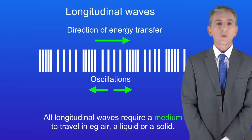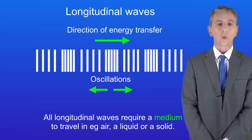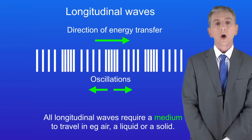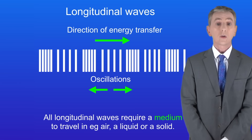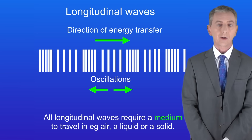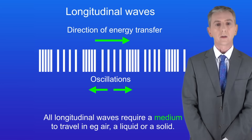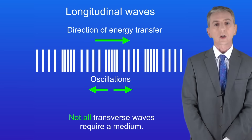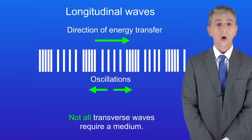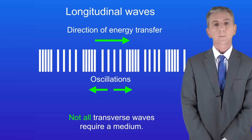Unlike transverse waves, the key feature of a longitudinal wave is that the oscillations are parallel to the direction of energy transfer. There is one other key difference: all longitudinal waves require a medium to travel in — for example air, a liquid, or a solid. In contrast, not all transverse waves require a medium, and we'll look at some of those in later videos.